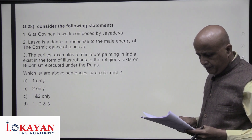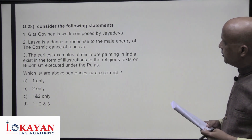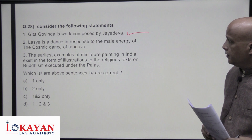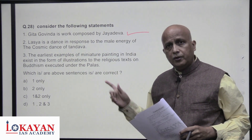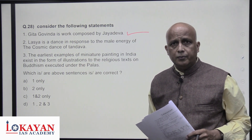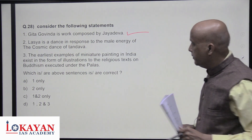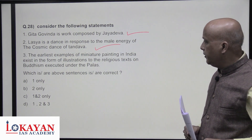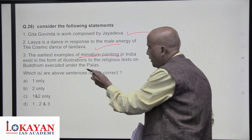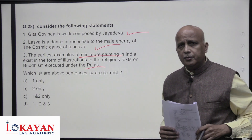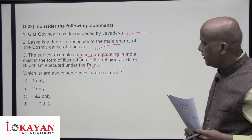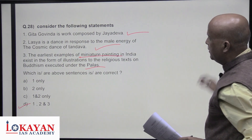Gita Govinda was composed by Jayadeva — the famous Orissan court poet wrote this celebrated work in Sanskrit. Lasya dance is in response to the male energy of the cosmic Tandava dance — Tandava is male energy shown in war dance, and Lasya is its female counterpart. The earliest example of miniature painting in India exists as illustrations in religious texts executed under the Palas — miniature is not just a Mughal introduction; the Palas already practiced it. All three statements are correct.